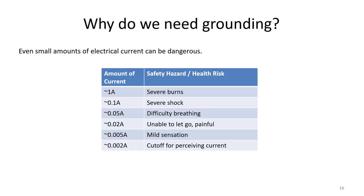Why do we need grounding? Even small amounts of electrical current can be dangerous. Above around 20 milliamps, electrical current can become quite painful, and near the amp range you can get severe burns and life-threatening conditions. It's very important to handle electrical components carefully and avoid exposing ourselves to even small amounts of current, especially when working with circuits that have very high voltage.